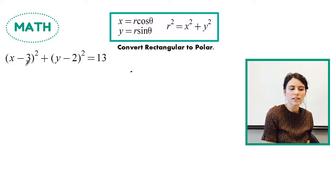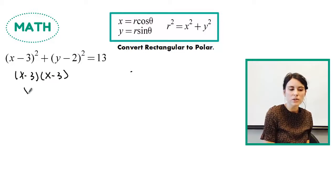So x squared minus 3 is going to be x minus 3 times x minus 3. When I foil that out it's going to give me x squared minus 6x plus 9.